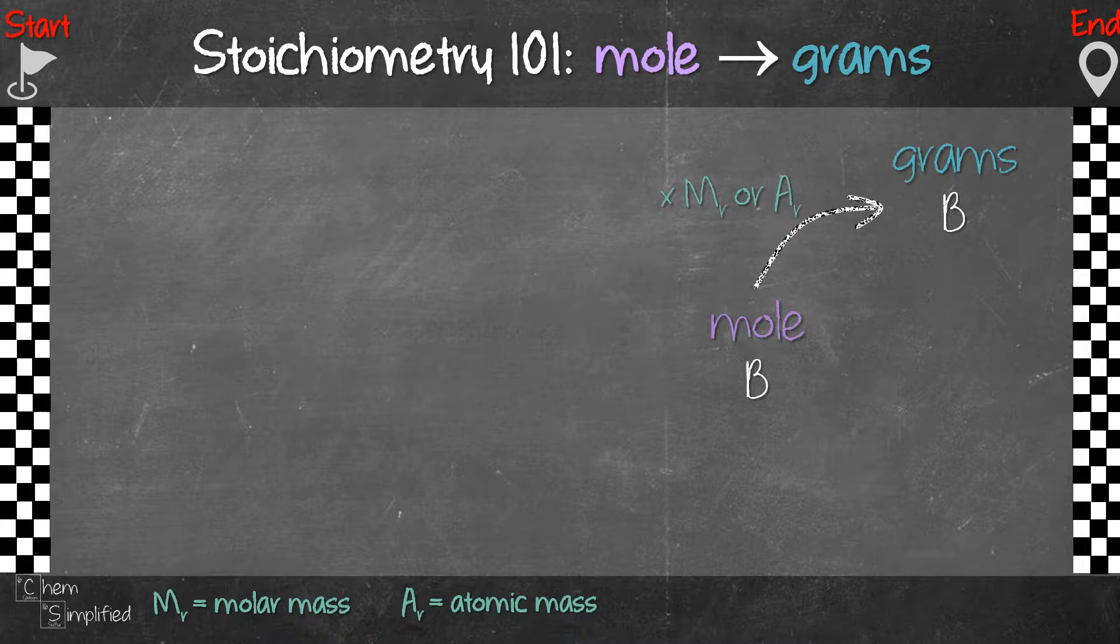So if the substance that's given is an atom, we'll just use the atomic mass. If the substance that is given is a compound, then we'll use the molar mass for that particular compound.